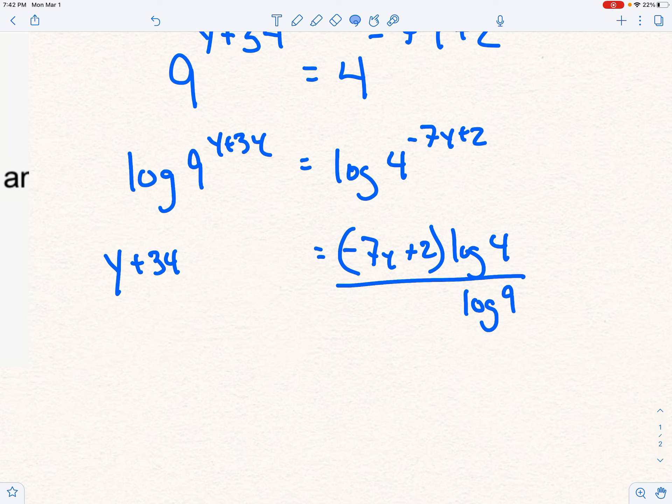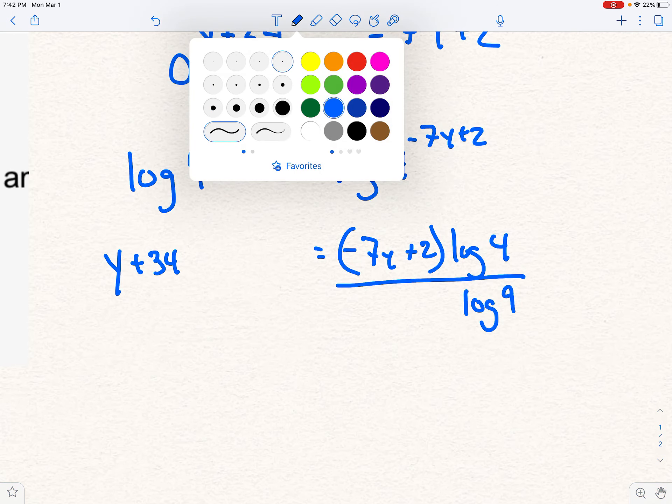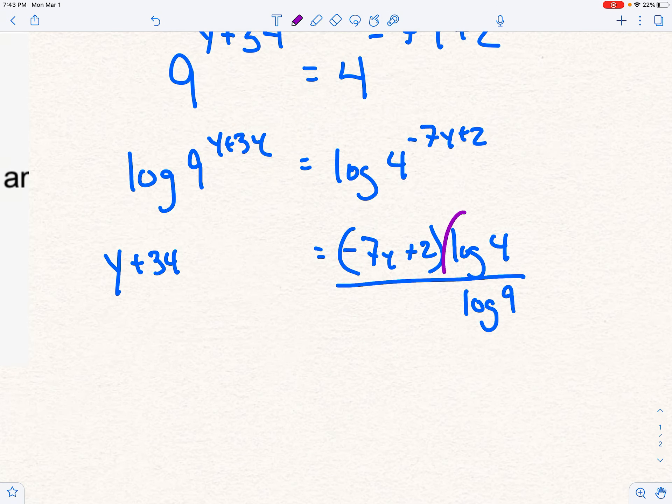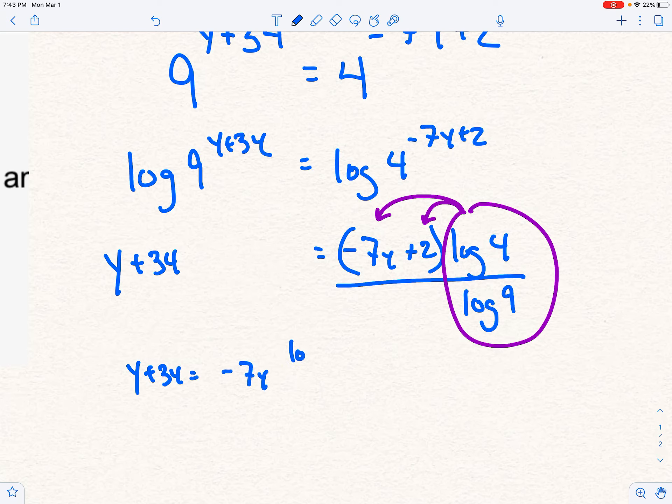Now I'm going to find myself in a situation where I think I should do that step I was just talking about. I'm going to go ahead and take this guy, and I'm going to distribute it. Because I have this y in here, this one, and this one, and I need to get those y's together on the same side. So let's do that. I have purple selected. I'll go back to blue. So I'm going to go y plus 34 is negative 7y and then log of 4 over log of 9 plus 2 and log of 4 over log of 9. Okay, so there's my distributing done.